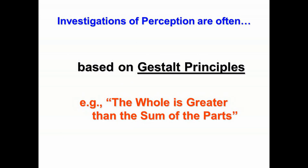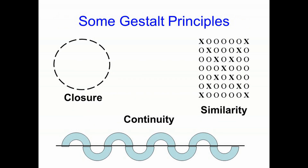Many psychologists who have studied processes of perception would describe themselves as gestalt psychologists. The overarching gestalt principle is that the whole is greater than the sum of the parts. This means that the whole unitary object or event is not reducible to its separate parts — that when they come together, they make something more. There are also other gestalt principles that you need to know.